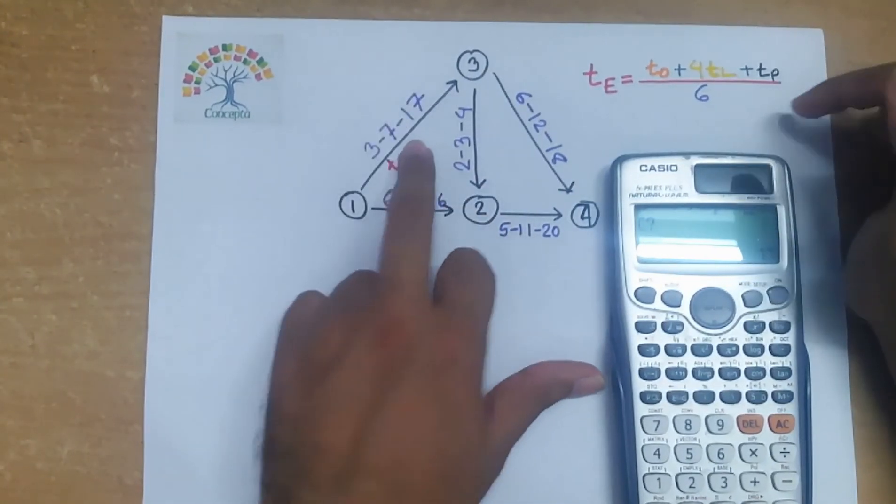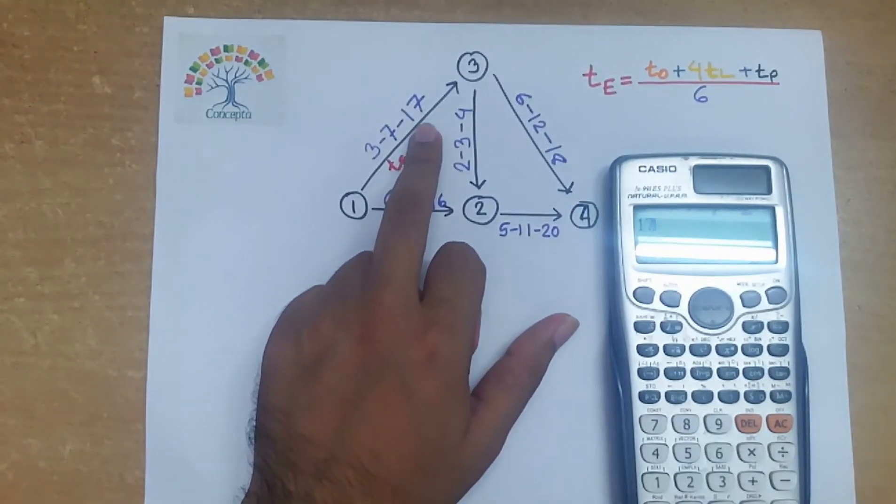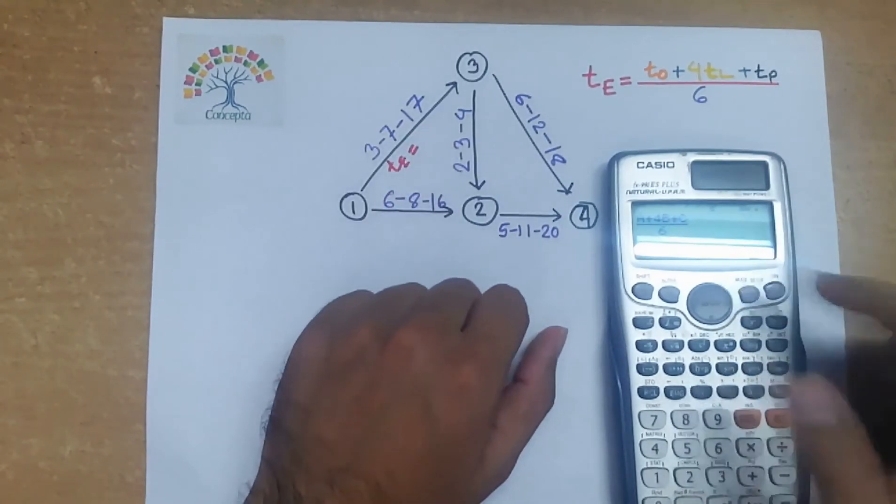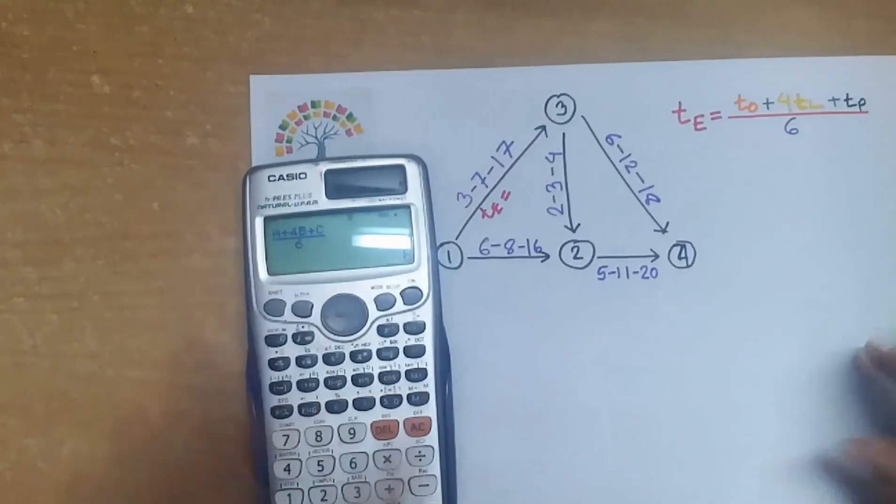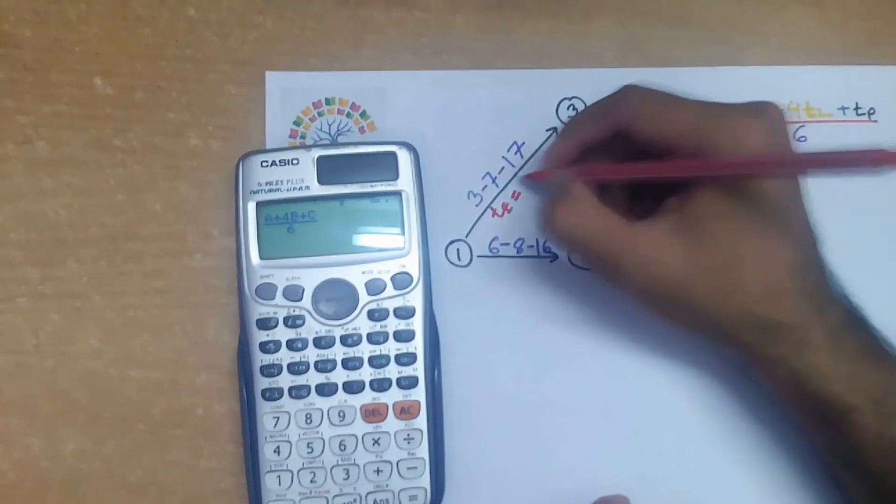press c instead of tp. That means c represents tp. So in the path, 17 represents pessimistic time, that is tp. So we will put 17. Then put equals. Then our te equals to 8. So we have found out the expected time te for path 1-3, which is 8.